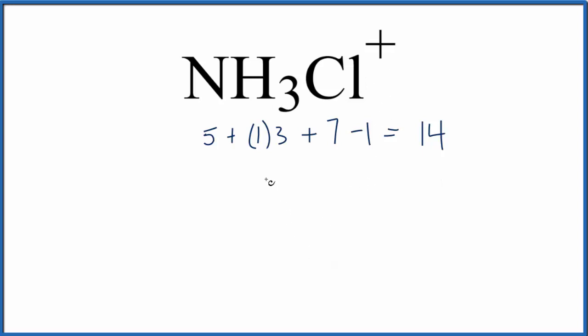So let's put the nitrogen in the center, that's the least electronegative, hydrogens always go on the outside. So we'll put our nitrogen here, we have 3 hydrogens, and then our 1 chlorine atom.